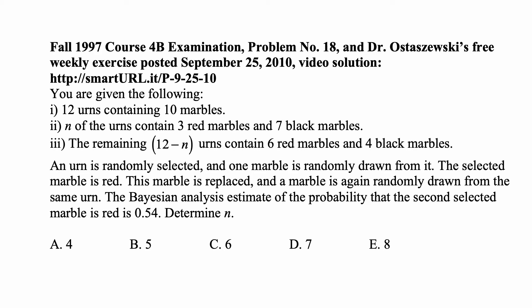An urn is randomly selected and one marble is randomly drawn from it. The selected marble is red. The marble is replaced and the marble is again randomly drawn from the same urn. The Bayesian analysis estimate of the probability that the second selected marble is red is 0.54. Determine N.